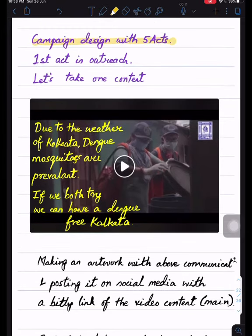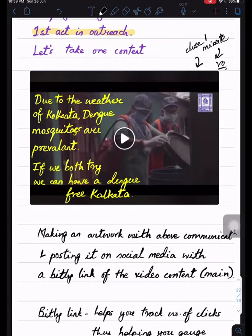We originally designed the campaign with a five-act strategy. The first act was the outreach program, where we tried reaching as many people as possible. We created one mother content—a video with a message about Kolkata's weather and dengue mosquitoes, including Bengali text communicating our call to action.